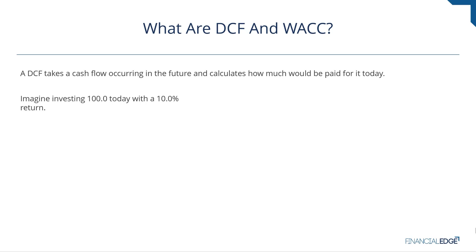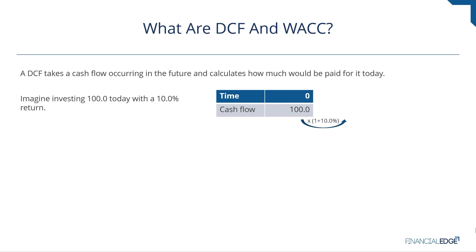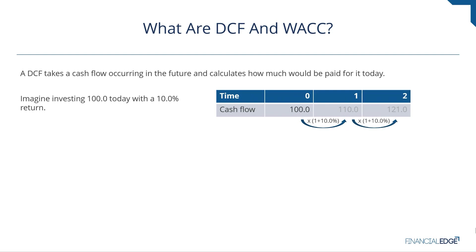Imagine investing $100 today and you require a 10% return. At time period zero, your cash flow out from you is $100. That 10% return means your investment is going to grow, so we multiply that $100 by 1 plus 10%, or 1.1. That means at time period one — one year from today — your investment will be worth $110. Then another year on, after another 10%, it'll be worth $121.